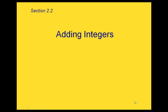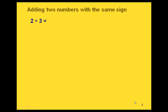This is section 2.2, adding integers. We're going to look at adding two numbers with the same sign — so either two positive numbers or two negative numbers.